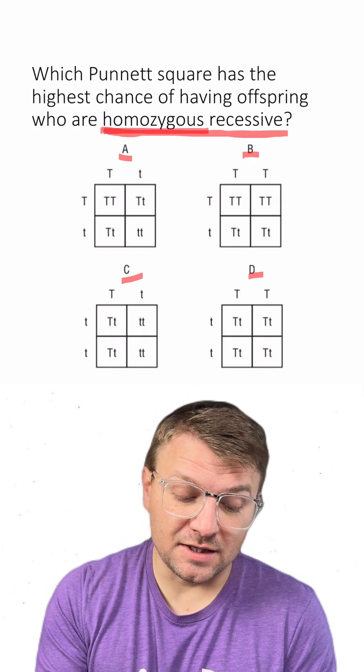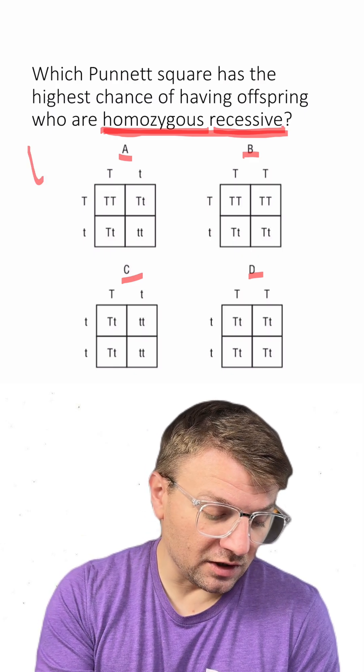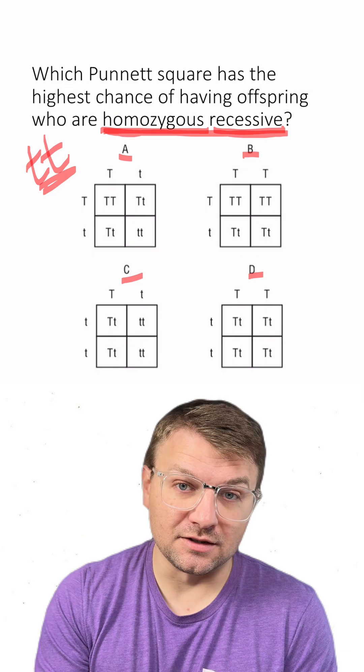Remember that homozygous means the same, and recessive means the lowercase letters. So in this case, we're looking for the offspring to be little t, little t.